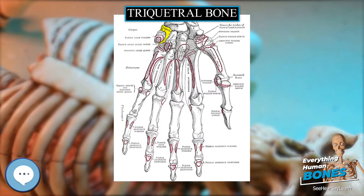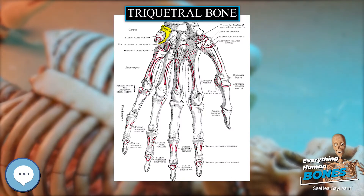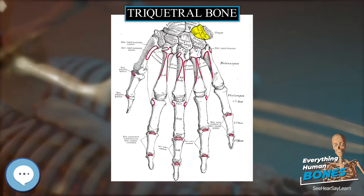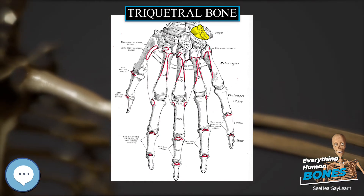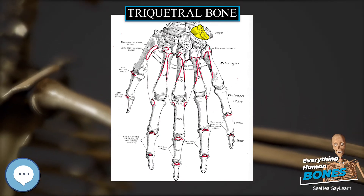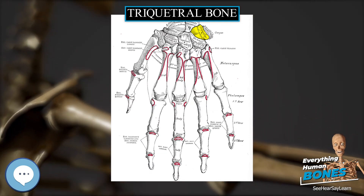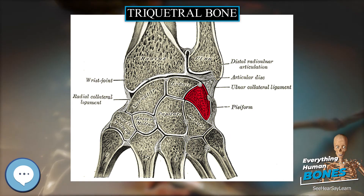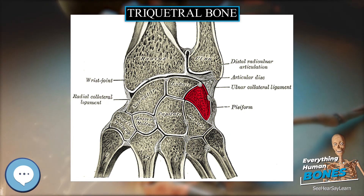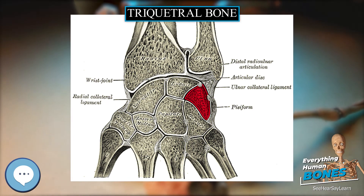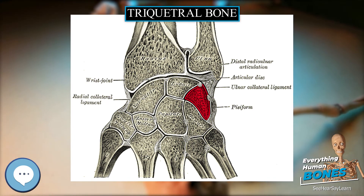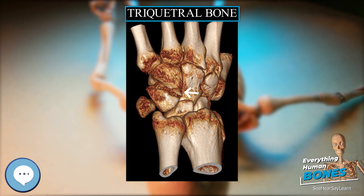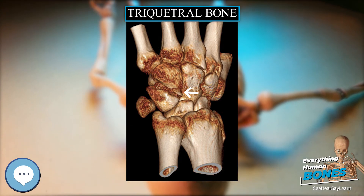The medial surface, the summit of the pyramid, is pointed and roughened for the attachment of the ulnar collateral ligament of the wrist. In animals: In reptiles and amphibians, the bone is instead referred to as the ulnar, since, at least in the most primitive fossils, it articulates with the ulna.